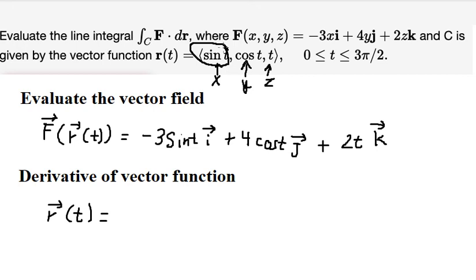First derivative of sin t will be cos t. First derivative of cos t will be negative sin t. And the last one, that is about one.